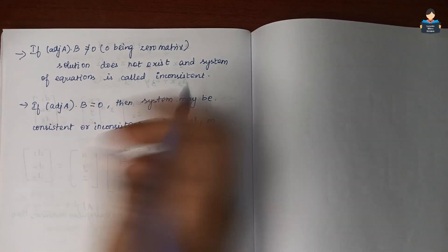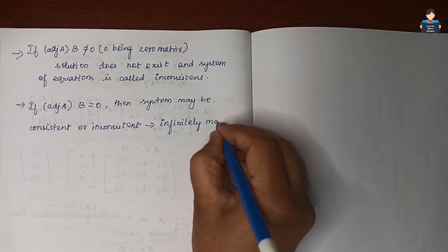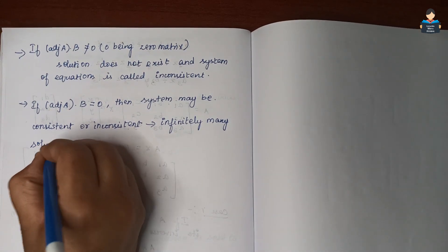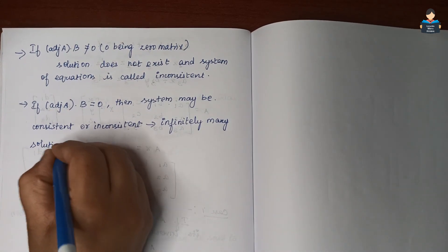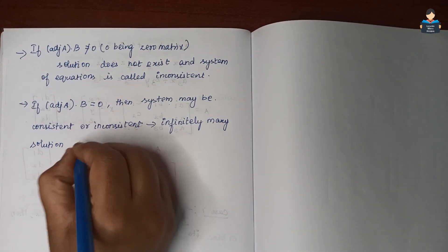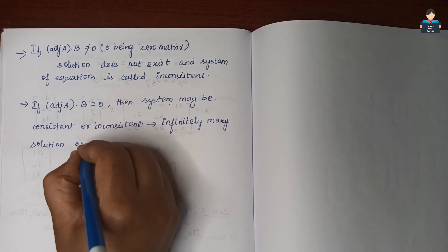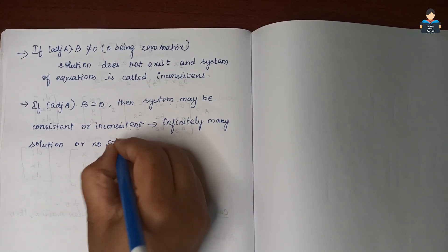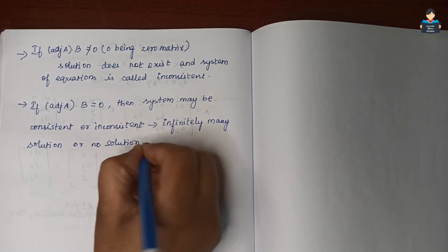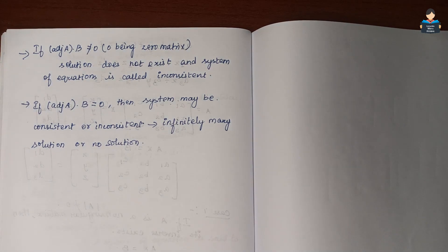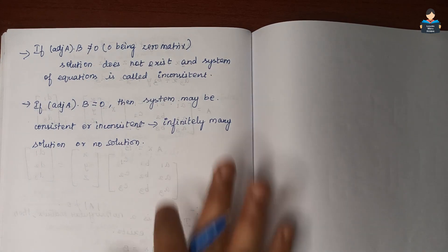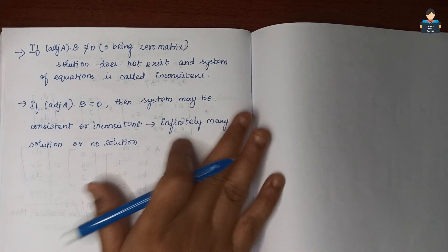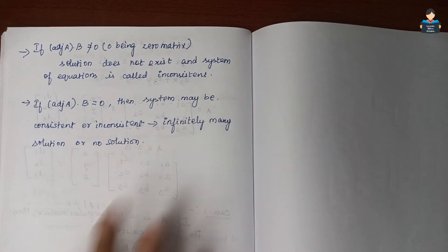When adjoint of A into B equals zero, the system may have infinitely many solutions or no solution — that is, it may be consistent with infinite solutions or inconsistent with no solution.